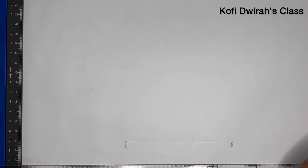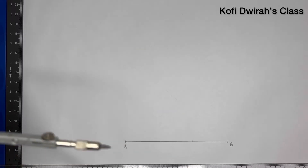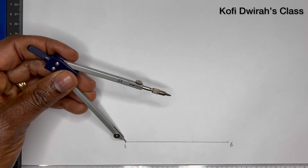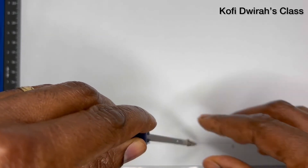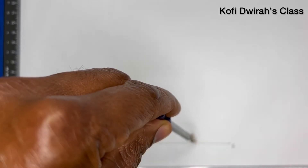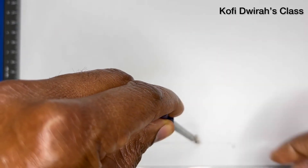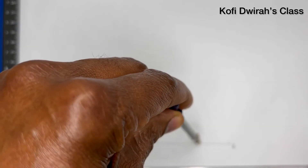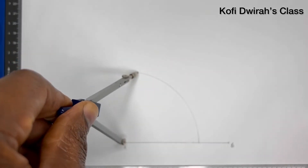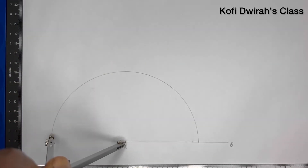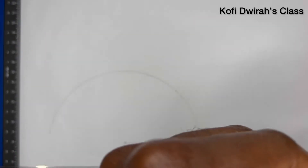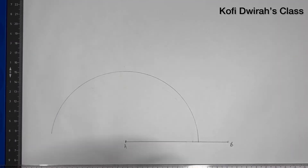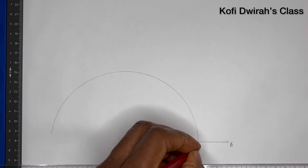Then after drawing line AB, you place your compass at point A, open your compass to any radius, then you draw an arc. We consider this point to be point C.